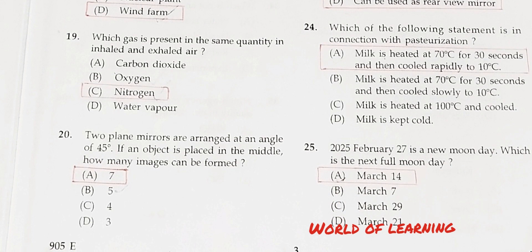Question 19: Which gas is present in the same quantity in inhaled and exhaled air? Option A: Carbon dioxide. Option B: Oxygen. Option C: Nitrogen. Option D: Water vapor. Correct answer is Option C, nitrogen.